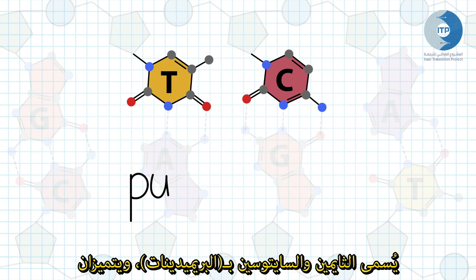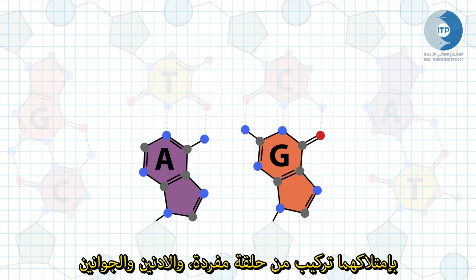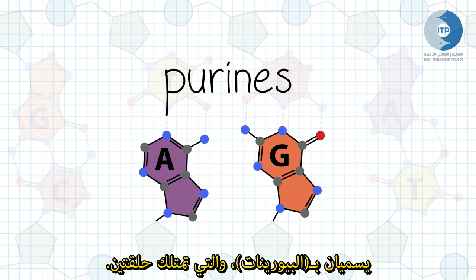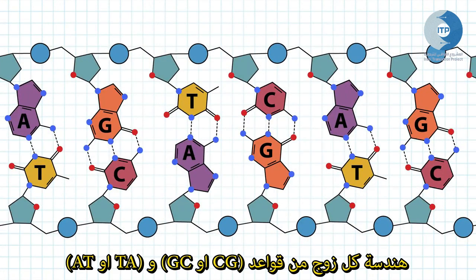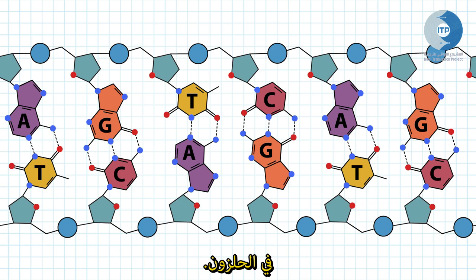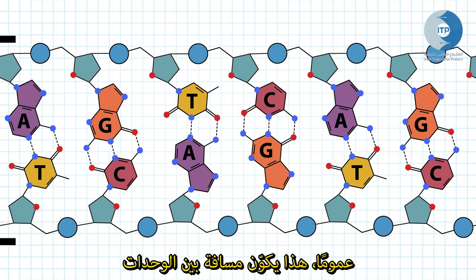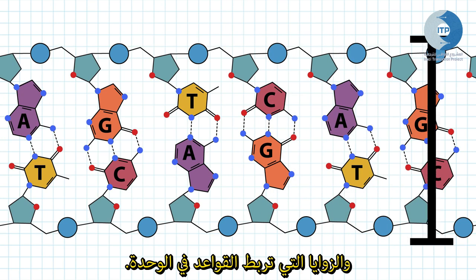Thymine and cytosine are called pyrimidines, characterized by their single ring structure, and adenine and guanine are called purines, which have double rings. The geometry of the AT or TA and GC or CG base pairs is the same, allowing for symmetry and base stacking in the helix. This mostly has to do with the distance between the backbones and the angles to which the base is attached to the backbone.